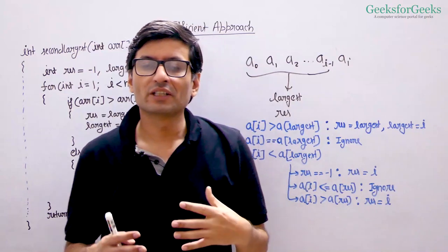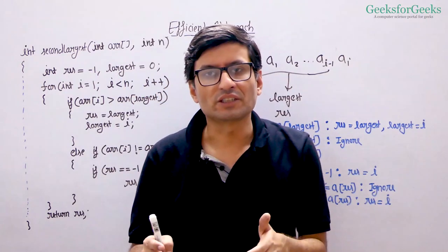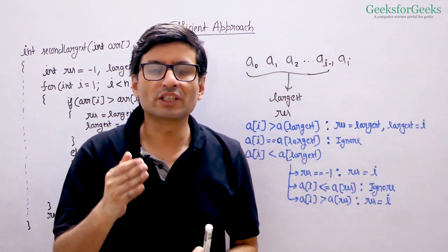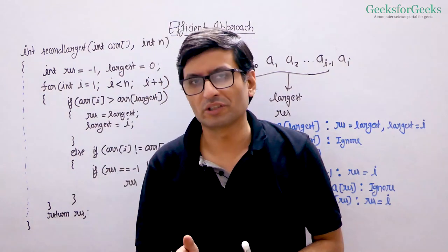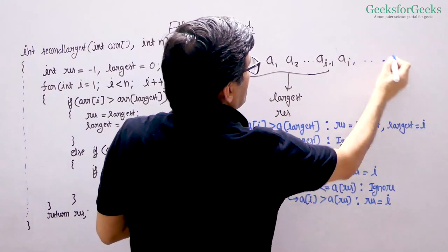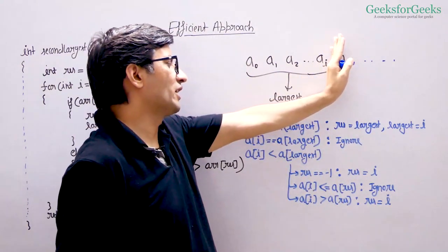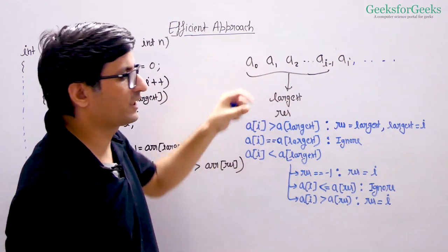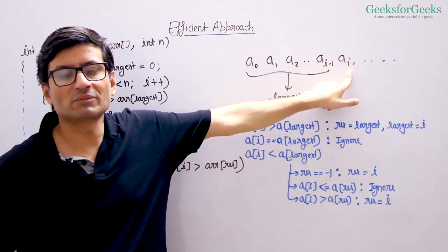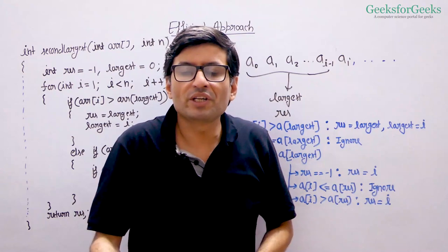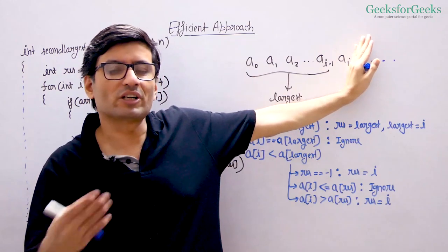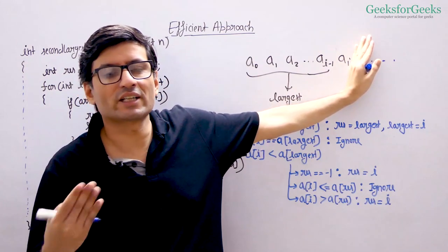Let us now talk about the efficient solution. The idea is: if you consider your array as a stream of data and traverse from left to right, you can always keep track of the largest and second largest up to the current point. If we have traversed from index 0 to index i−1 and computed the largest and second largest for that prefix, then when element a[i] comes in, we should be able to update largest and second largest in constant time — making this a one-traversal linear time solution.